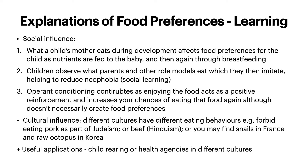Looking at the social and learning side of food preferences, we have social influence. What a child's mother eats during development — so when in the womb — affects food preferences for the child, as these nutrients are fed to the baby through the womb. Then again through breastfeeding, everything the mother eats gets transferred into the breast milk, which the child has. Children also observe what parents and other role models eat, which they then imitate, helping to reduce neophobia — this is social learning.